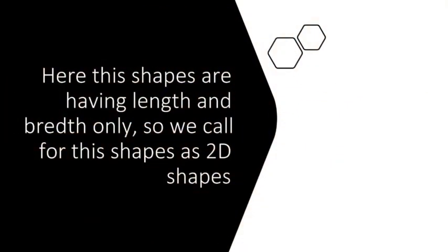Children, here these all are having length and breadth. So these shapes are having length and breadth only. So we call these shapes as 2D shapes. So 2D is nothing but two dimensions. Here, two dimensions are length and breadth.